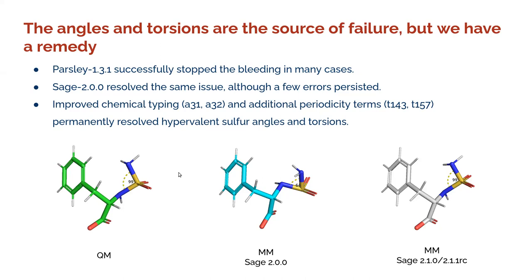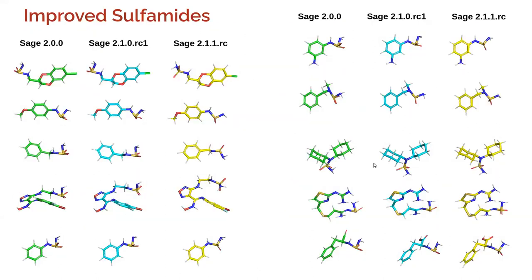The initial stop-the-bleeding fix was to revert angles A31 and A32 assigned for hypervalent sulfurs back to reasonable values manually, as the optimizer had shifted them in a bad direction. This fix was in 1.3.1. We didn't see the same pathology with Sage, but the other anomaly we observed was with sulfonamides — we were able to pinpoint the blame on angle parameters A31 and A32, and also torsion terms T143 and T157. The changes we made resolve the issues permanently, and I tested molecules from PubChem with the same functional group — they are all doing fine with the new iteration of the force field.